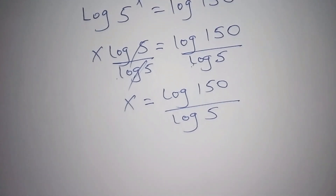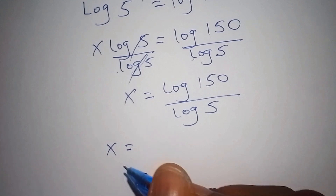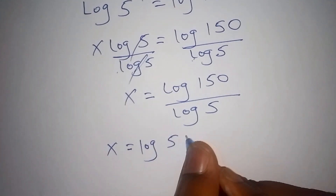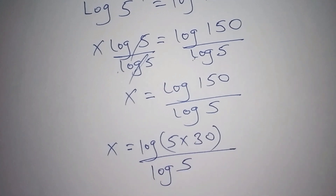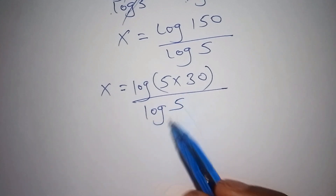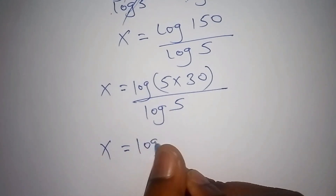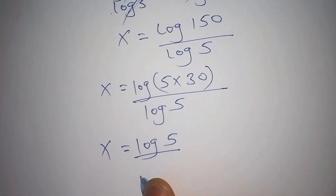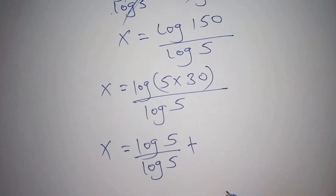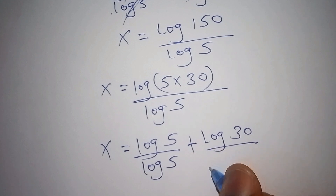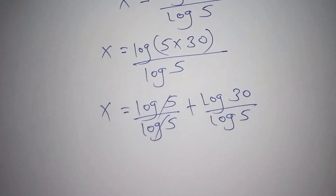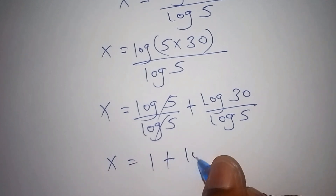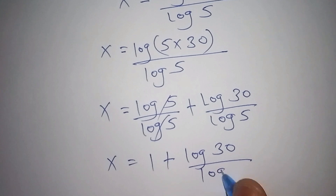We do not stop there — we shall proceed by now expressing the log of 150. We express 150 as 5 times 30, so x is equals to the log of 5 times 30 all over the log of 5. We shall split it: the log of 5 over the log of 5 plus the log of 30 over the log of 5. The sign for multiplication changes to addition according to the laws of logarithms. The log of 5 and the log of 5 cancel, so now x is equals to 1 plus the log of 30 all over the log of 5.